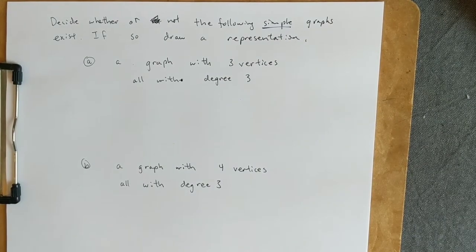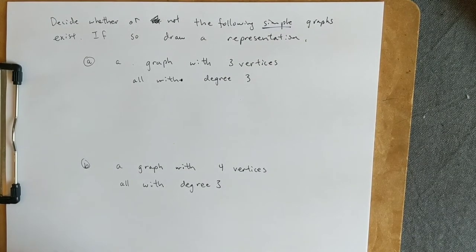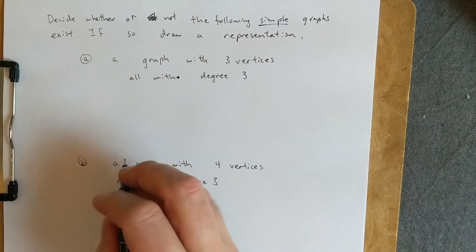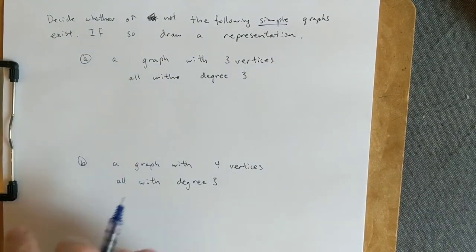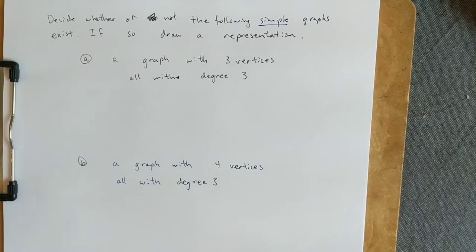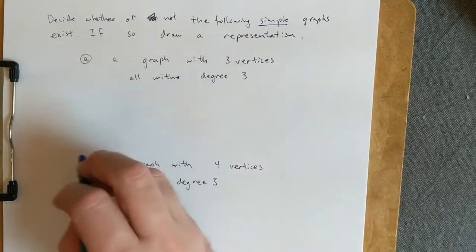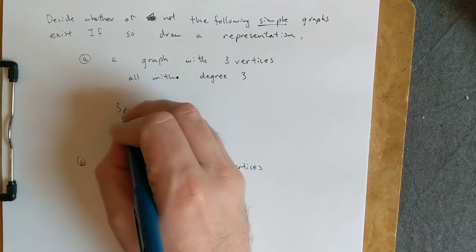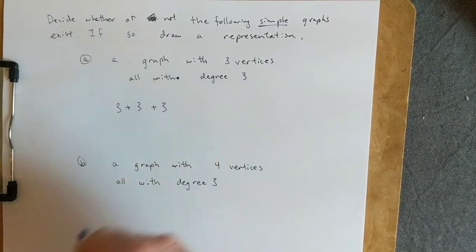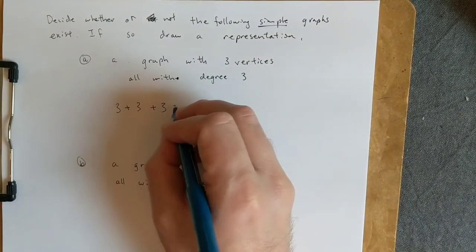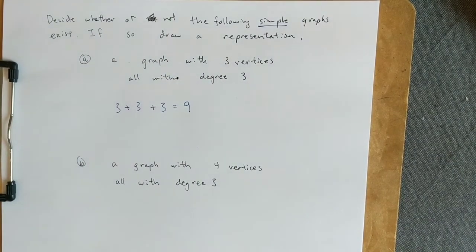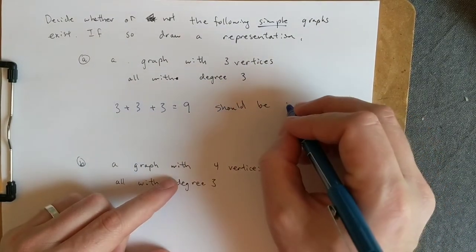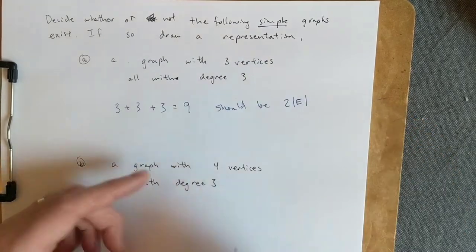We're going to decide whether or not the following graphs exist. The Handshaking Lemma will tell us that the first graph cannot exist. Remember the Handshaking Lemma says that if I sum up the degrees of all the vertices, it should be twice the number of edges. So I have three vertices, each with degree three. If I sum these up, you can just multiply these numbers: I get nine.